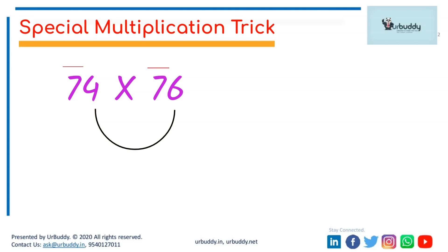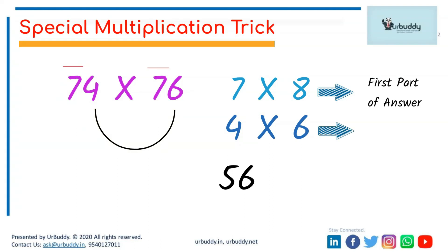So what we can do now is we can multiply 7 by its immediate successor, that is 7 multiplied by 8. This gives us the first part of the answer, that is 56. The second part of the answer is just 4 multiplied by 6, that is 24. So 74 multiplied by 76 is 5624. That's it.